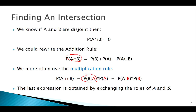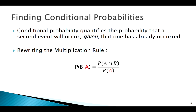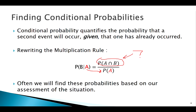We've also got conditional probabilities involved here. How do we find conditional probabilities? One way, using a rule we already have, is to rewrite our multiplication rule: P(B given A) equals P(A intersection B) over P(A) — whatever I'm given goes in the denominator. But if we're trying to find the intersection and don't know the conditional probability, lots of times we just have to think about the situation and come up with a conditional probability on our own.